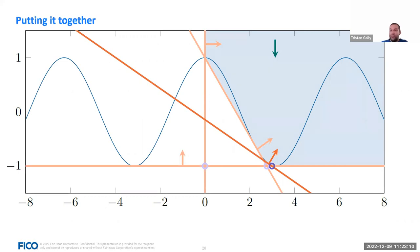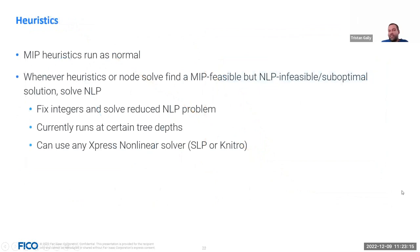For good feasible solutions we rely on heuristics. Any heuristics from the MILP case can still run, but since they're unaware of the nonlinear part they may find only MILP-feasible solutions that are nonlinearly infeasible. Whenever that happens, we try to go back to our existing local NLP solvers: we fix all integer variables and then solve the remaining continuous nonlinear problem. Of course there's no guarantee this problem is still feasible, and the local solver only gives a local solution — similar to how heuristics in the MILP case are never guaranteed to find the optimal solution. Nevertheless, if we do this frequently enough with further improvements deeper in the tree, we should at some point find a good and eventually optimal solution.